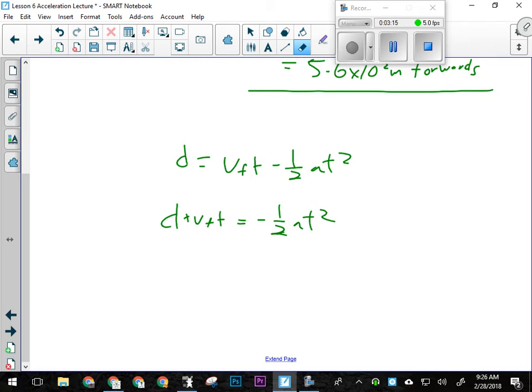Same for calculating VF. I'm going to add, so D plus 1/2 AT squared is going to equal VF times T. So then I divide both sides by T, and I've got VF. So same manipulations as on the last one.